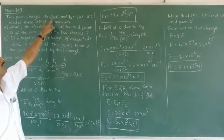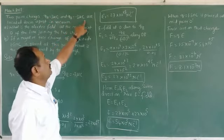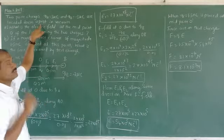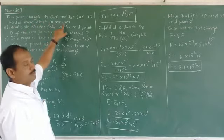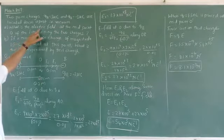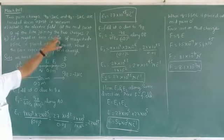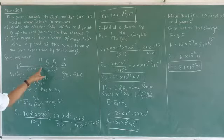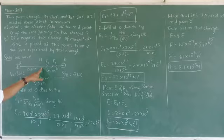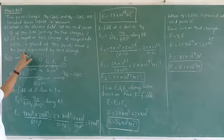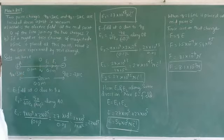Two charges: QA is 3 microcoulombs and QB is minus 3 microcoulombs, are located 20 cm apart. What is the electric field at the midpoint of the line joining the two charges? If a negative test charge of magnitude 1.5 nanocoulombs is placed at this point, what is the force experienced by the test charge?